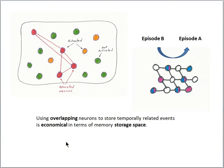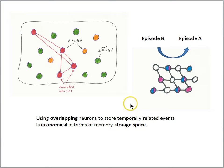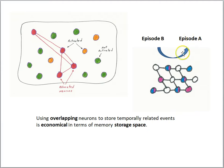If you think about why brains would do this, it makes sense to link memories because things happening in sequential fashion are often related. It also reduces the storage space necessary to encode these memories. Using overlapping neurons to store temporally related events is economical in terms of storage space, but it also gives the brain a way to link subsequent events.